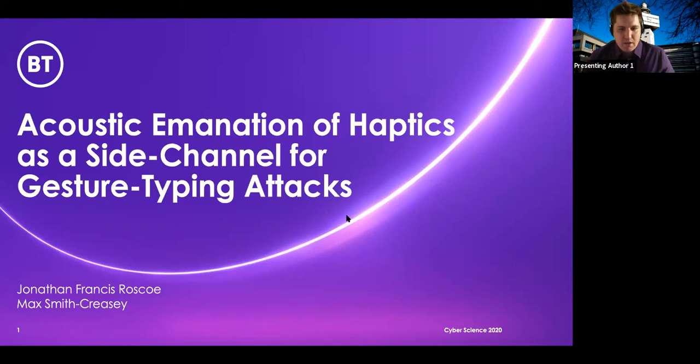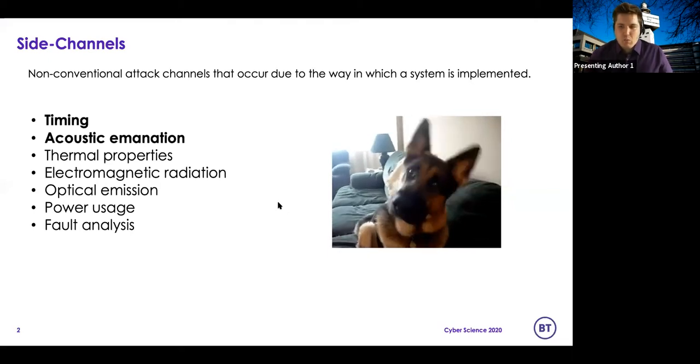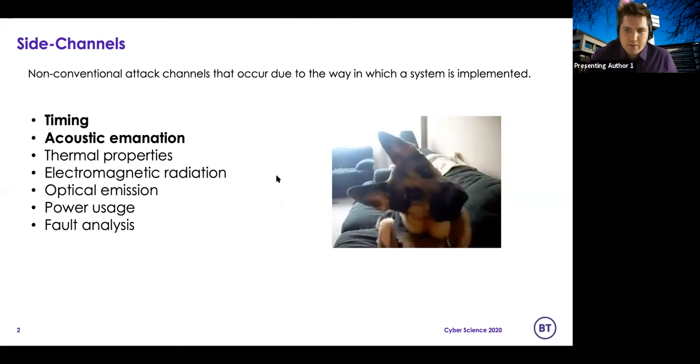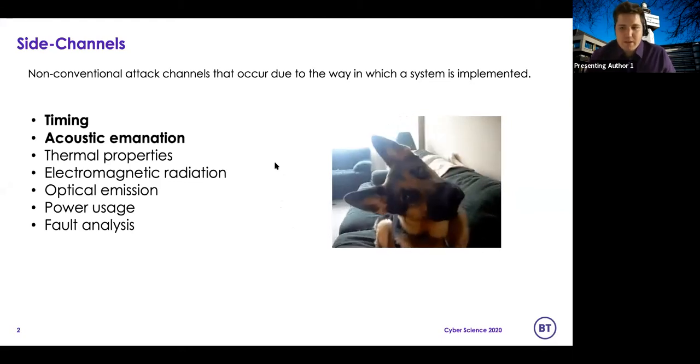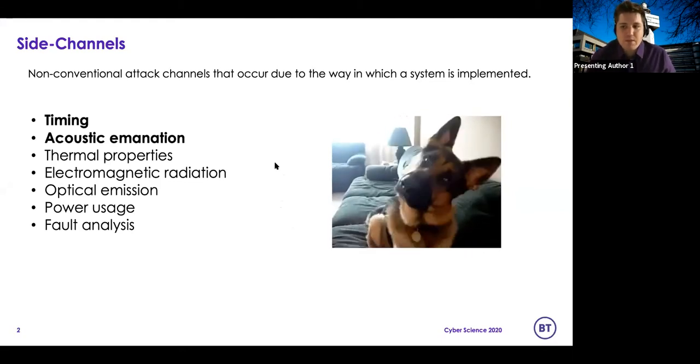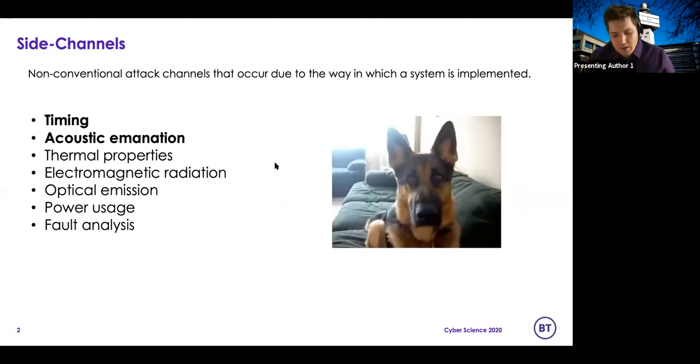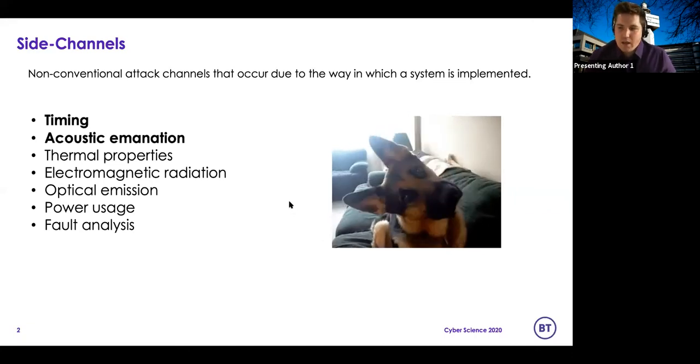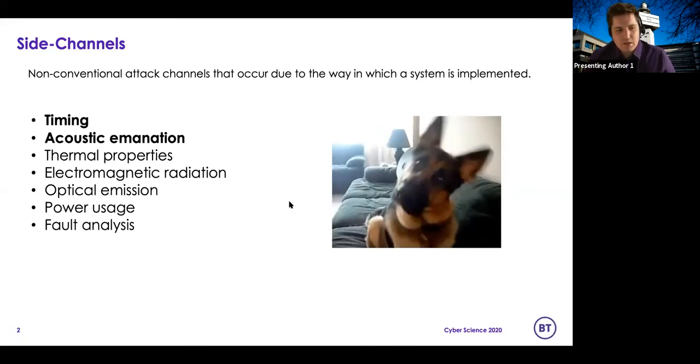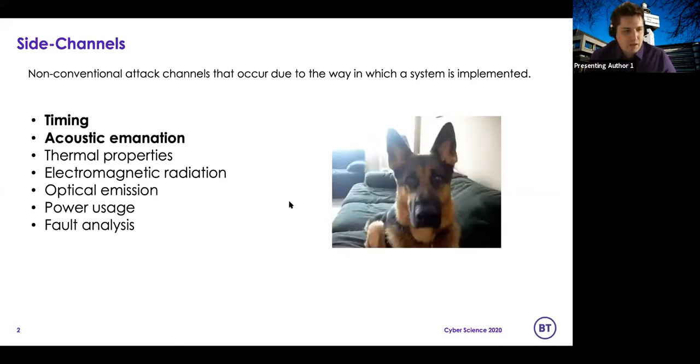So to start I want to talk a bit about side channel attacks. And what are they? Side channels are properties of a system that are present not because of the way the system was designed but because of the way it was implemented. So these are channels that can be exploited inadvertently to achieve various ends. Eavesdropping, secret finding is a common one, and numerous examples of these have gone back a long, long way.